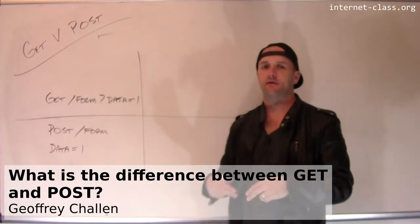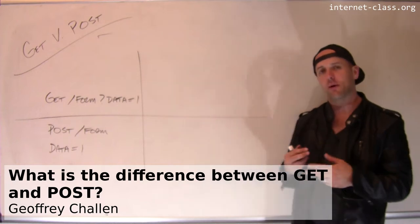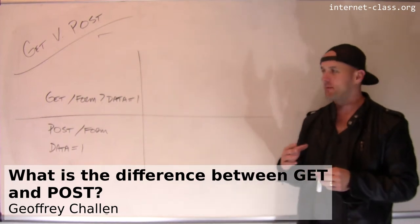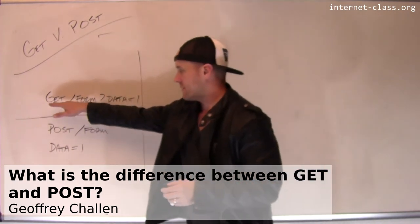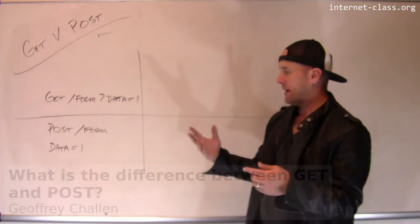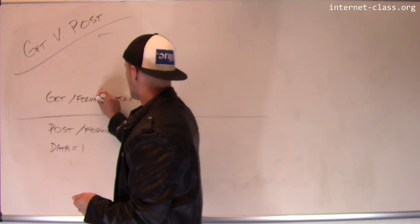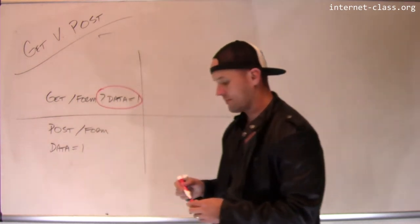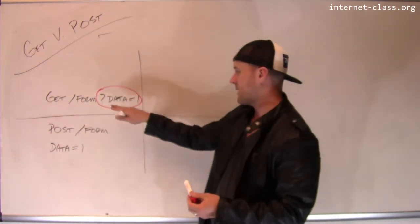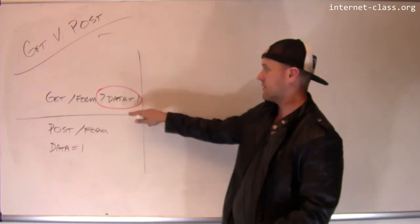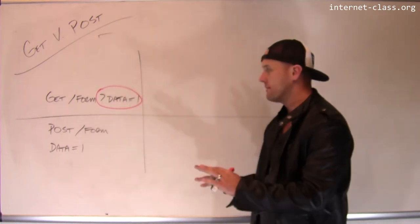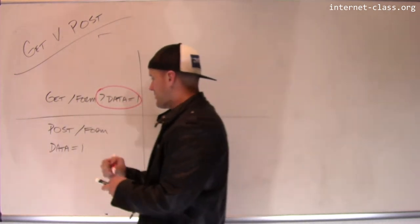We know of two ways to communicate data to a web server as part of an HTTP request. There's the get form, where I get a page and then I pass in this list of parameters. So in this case, I'm communicating a piece of information to the server. That piece is a key value, so the key is data and the value is one.